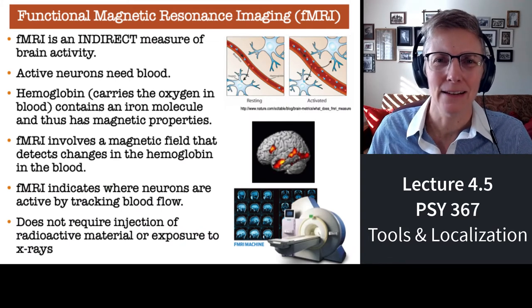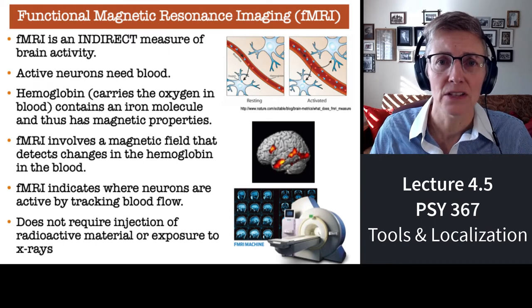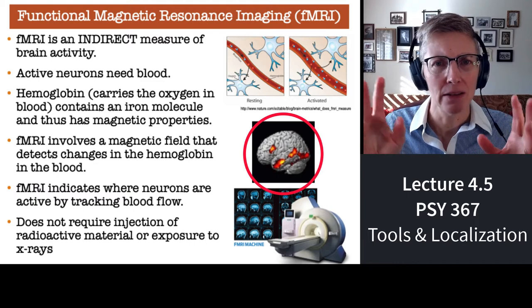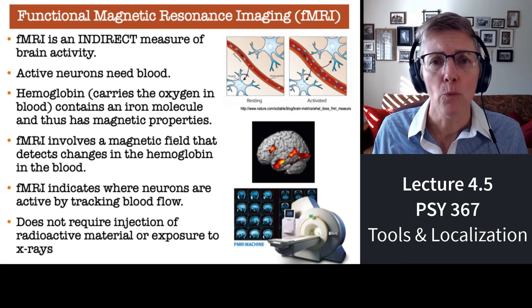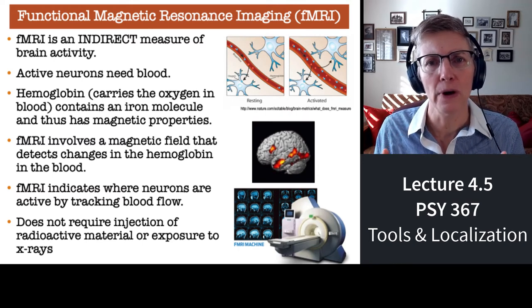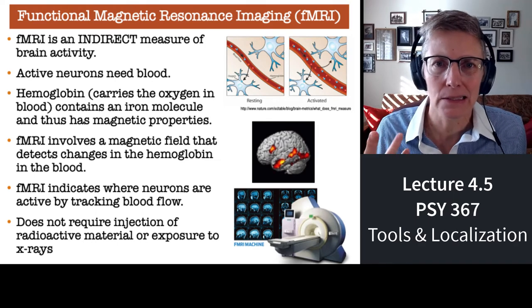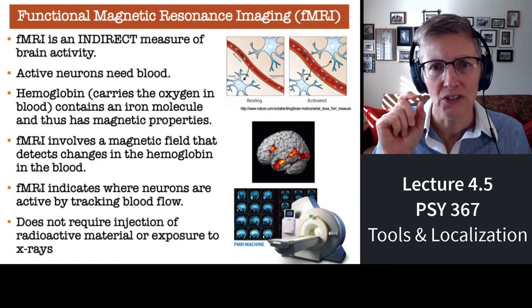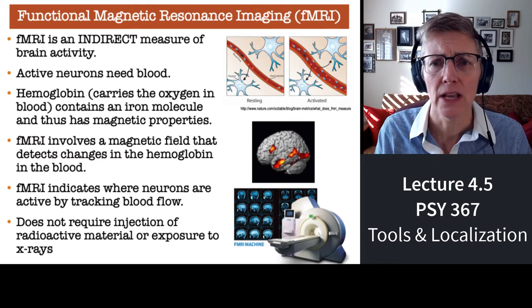Another very commonly used technique now is fMRI — Functional Magnetic Resonance Imaging. fMRI is what you see in those beautiful, colorful pictures of the brain. They tell you what part of the brain has been active in the last 10 seconds or so. You can get pretty good spatial resolution with fMRI, though the temporal resolution is not as strong.